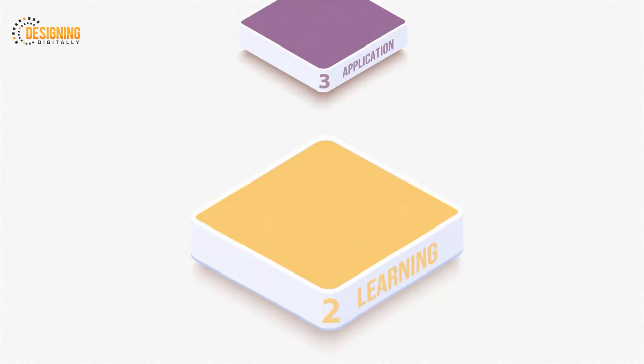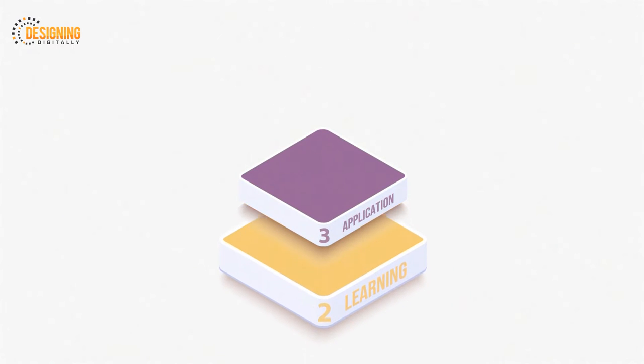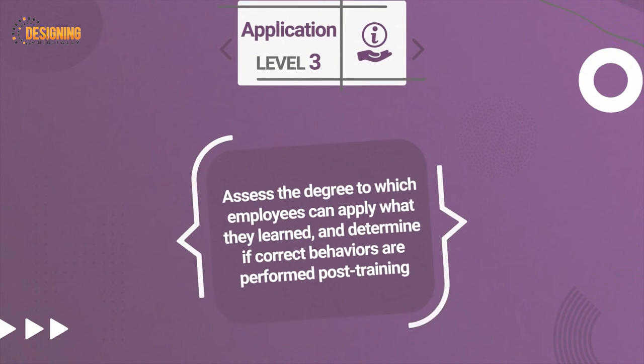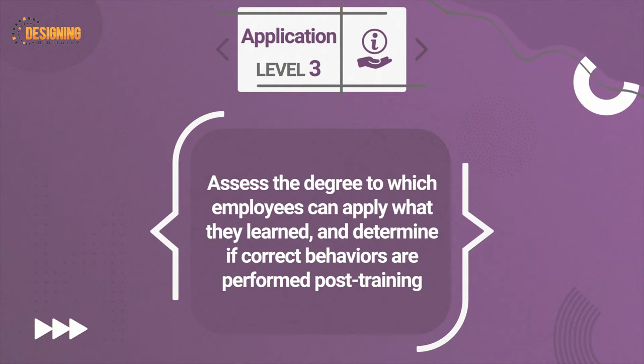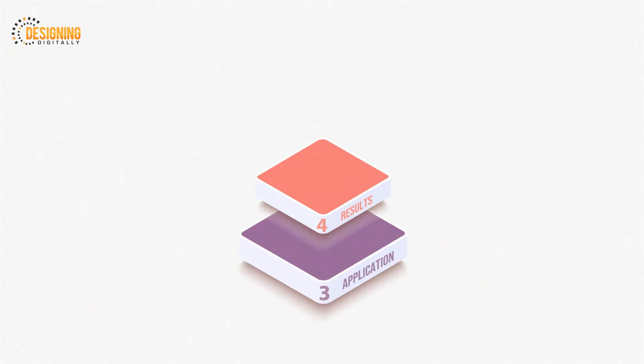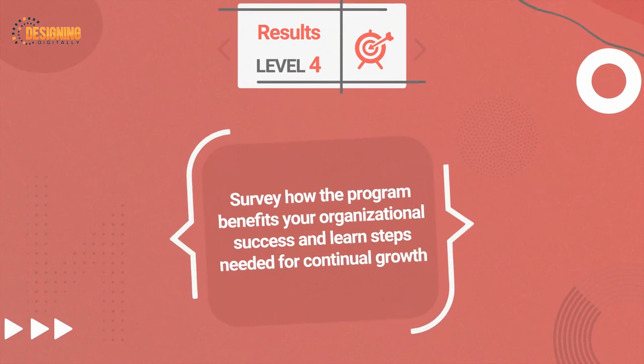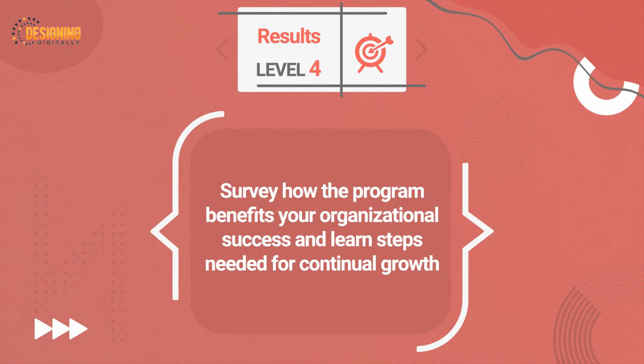Next is level three: Application. Assess the degree to which employees can apply what they learned and determine if correct behaviors are performed post-training. Level four: Results. Survey how the program benefits your organizational success and learn the steps needed for continual growth.